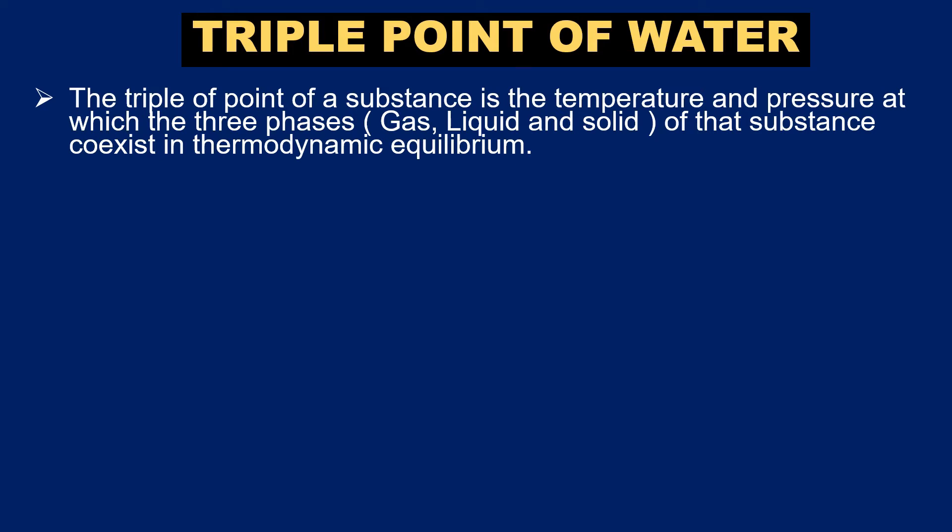So we have the triple point of water. The triple point of a substance is the temperature and pressure at which the three phases of that substance — solid, liquid, and gas — co-exist in thermodynamic equilibrium. This is the triple point of water. What is the pressure and what is the temperature?